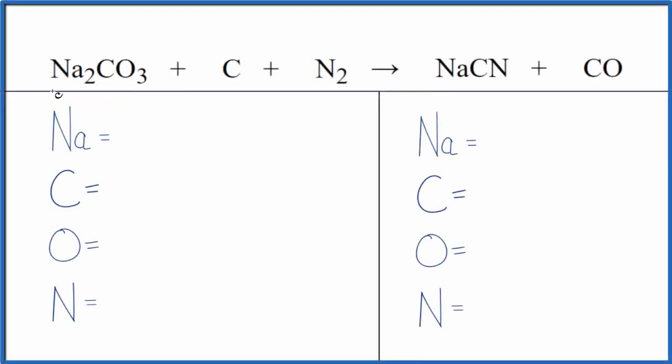Let's balance the equation for Na2CO3 plus C plus N2. This is sodium carbonate, this is just carbon, and this is diatomic nitrogen gas here. So let's first count the atoms up and then balance the equation.